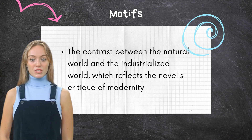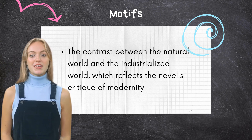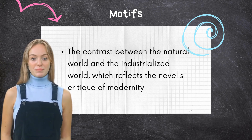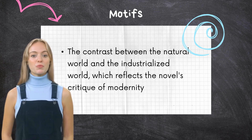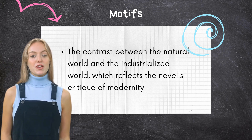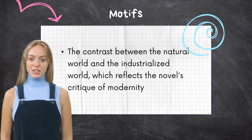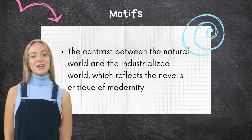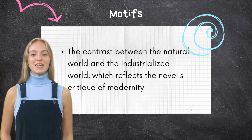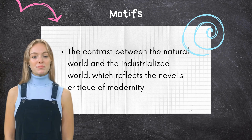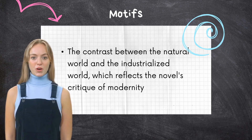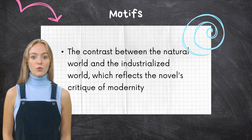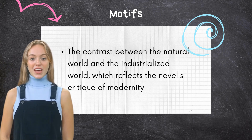The Grapes of Wrath explores themes of survival, family and community, exploitation, and the American Dream. Its motifs include biblical allusions, the image of a turtle crossing the road, and a contrast between the natural world and industrialization. The novel is still relevant today due to its commentary on poverty, inequality, and social justice. Large corporations are still exploiting workers, while beliefs in the American Dream are being disillusioned. Readers today can gain insight into the lives of marginalized people through Steinbeck's vivid characters and powerful writing.